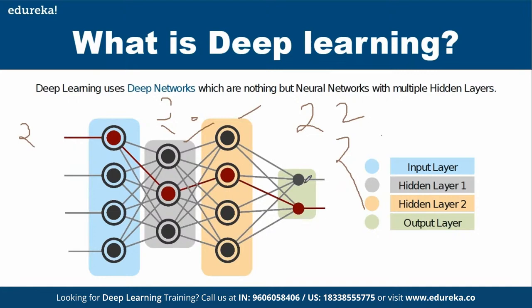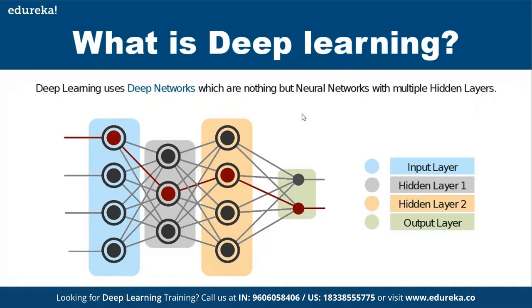Finally, signals propagate: if this algorithm identifies whether a number is one or two, the output layer will signal which it is. If it is highly activated at one output node, it has identified the number as two. Internally there are a lot of mathematical functions happening, but overall any deep neural network has these layers, and the entire work is done by the hidden layers.